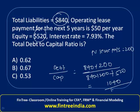This means the numerator total is 1040, and the denominator total is 1560. So 1040 divided by 1560 gives a ratio of 0.666. Therefore, the correct answer is option B.